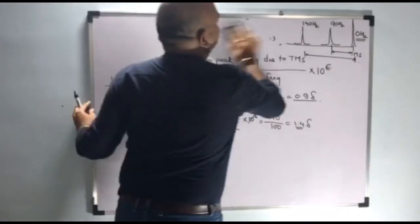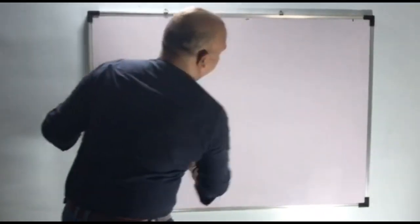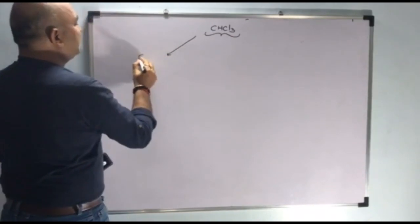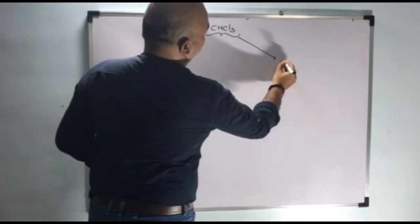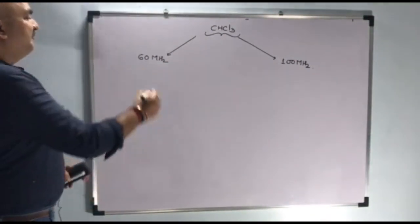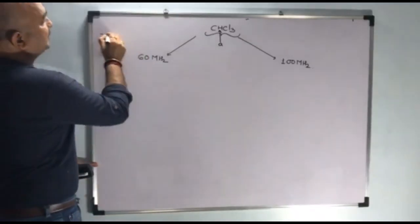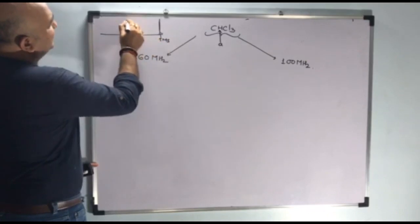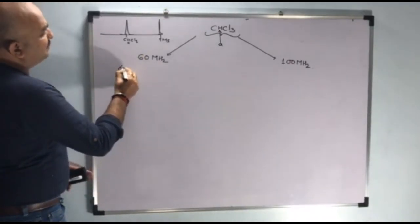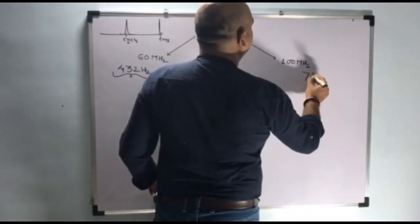We will do one experiment. We have taken NMR spectra of chloroform. First, we took it on 60 megahertz, and then on 100 megahertz. Chloroform has only one type of proton, so it gives one NMR signal plus one signal due to TMS. The frequency due to the CHCl3 peak was found to be 432 hertz on 60 megahertz and 728 hertz on 100 megahertz.